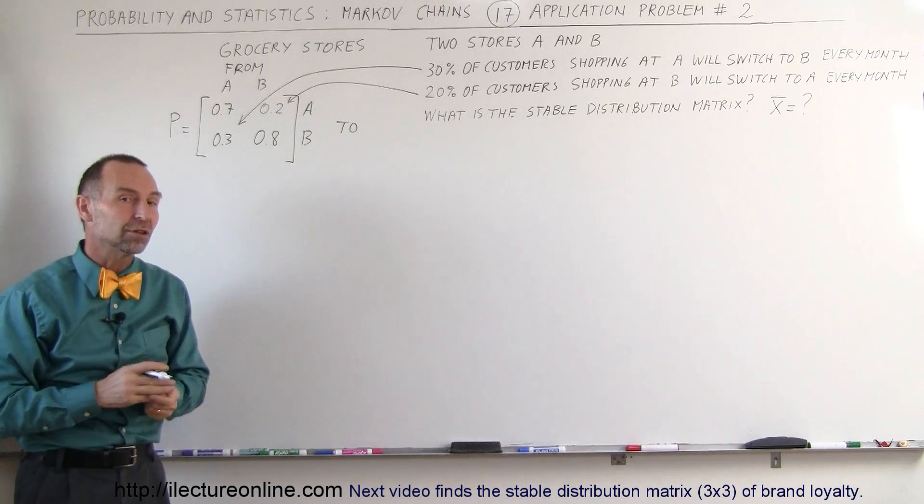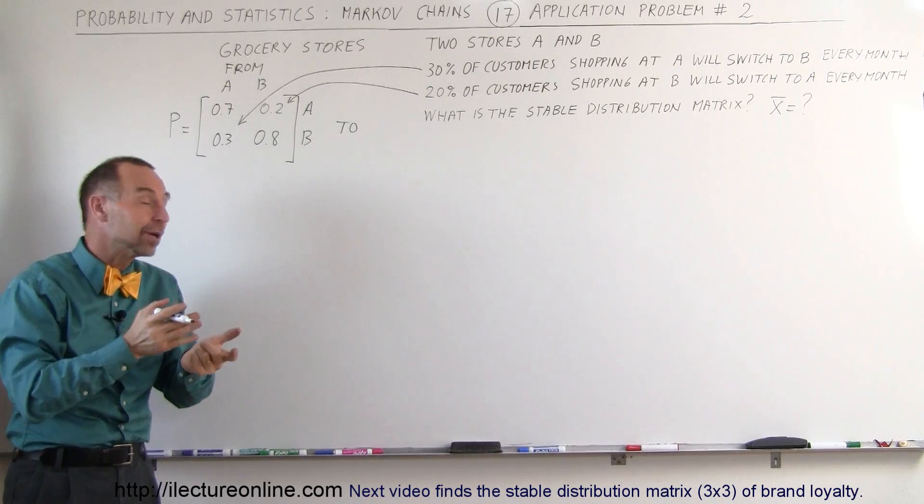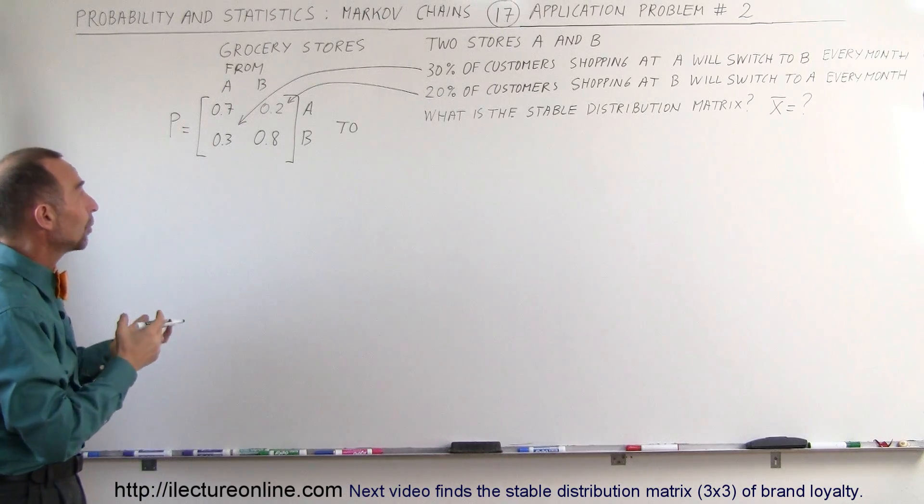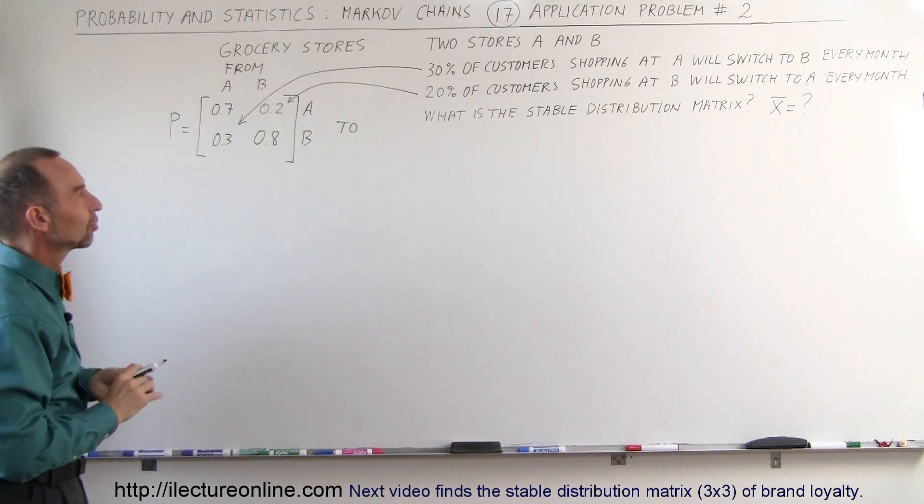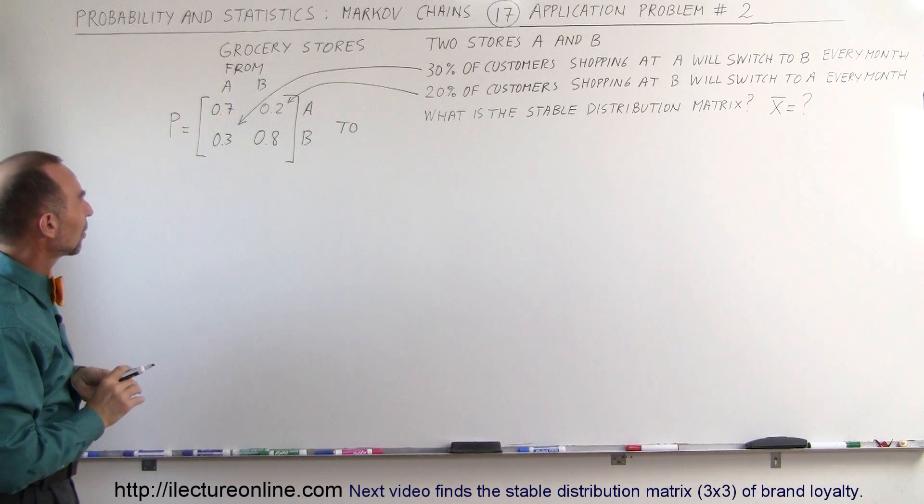So if this is the situation, how many customers will A end up with and how many customers will B end up with? Well, that's what we're trying to find because that will be the stable distribution matrix that we're looking for.